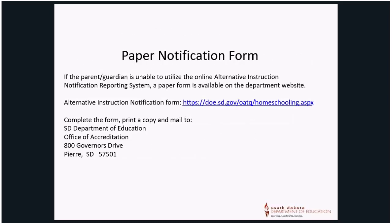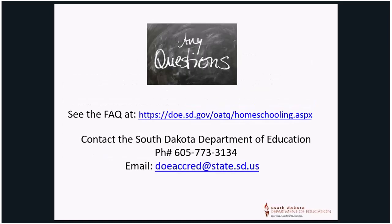If the parent or guardian is unable to utilize the online Alternative Instruction Notification Reporting System, a paper form is available on the Department website. If you should have any questions about this information, contact the Department of Education. Thank you.